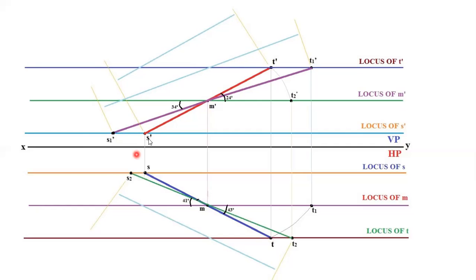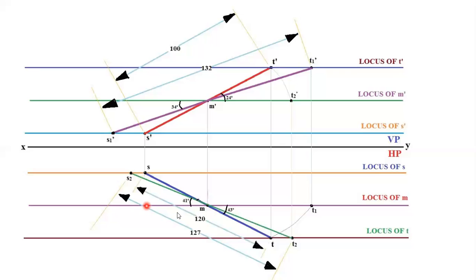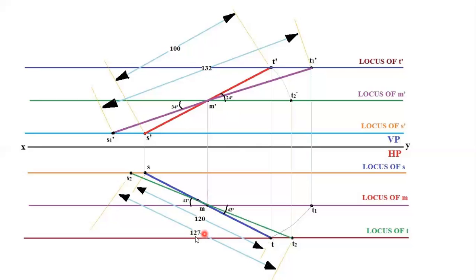For example, if you want to dimension S dash T dash, the extension line should be perpendicular to S dash T dash, and the dimensioning line should be parallel to it. The same applies for true length and top view. The arrowhead should be short and pointed, darkened with your HB pencil. Extension lines can be drawn with a 2H pencil, and dimensioning can be done with an H pencil. It is more than enough to dimension the true length only once, because the true length is the same for both top and bottom — no need to dimension both sides.